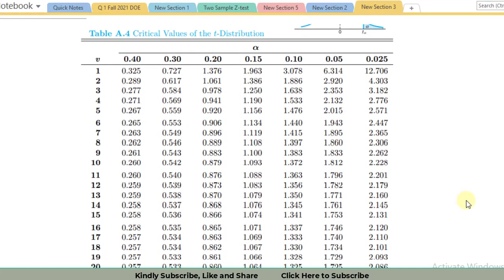This is the t distribution table in which you can see in the x-axis we have alpha values, and in the y-axis we have degrees of freedom.